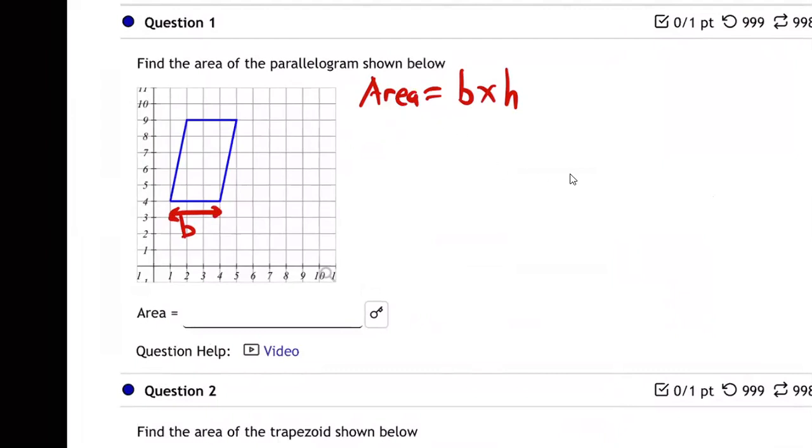So the base, we just count the jumps. Remember, we always count jumps, not dots. So it's going to be one, two, three. The base is three jumps.